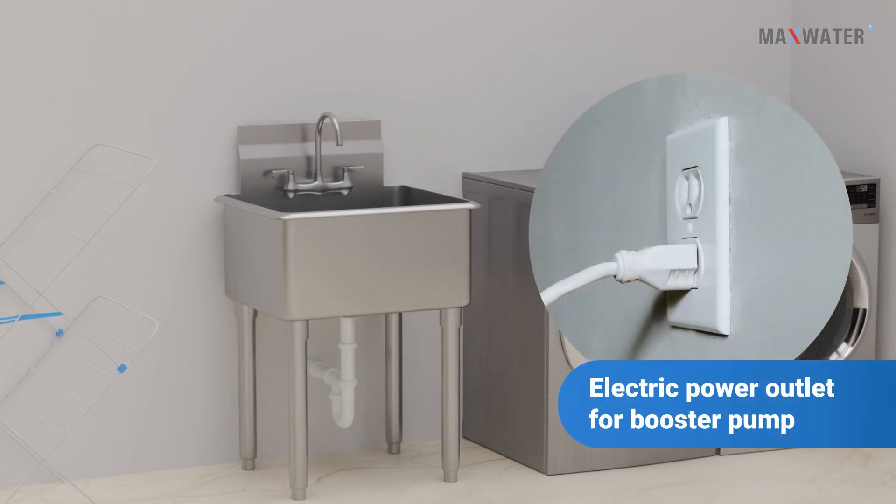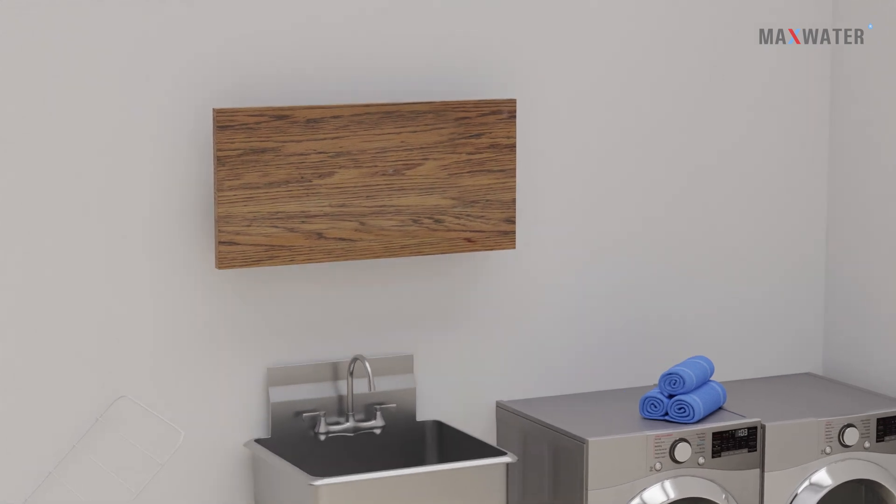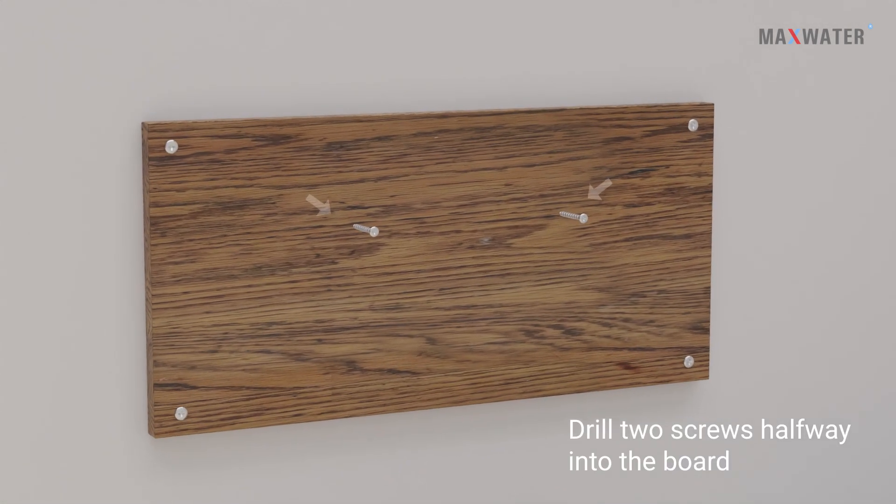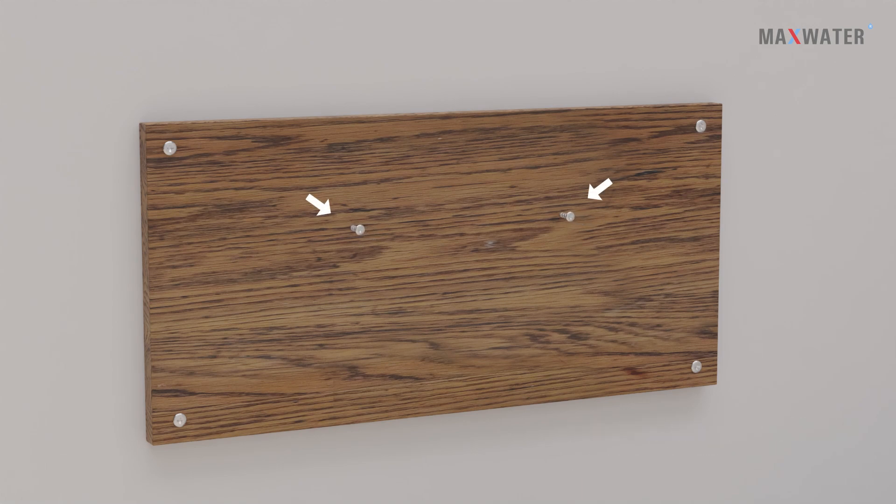Now board up the location and drill two screws halfway into the board, then use the two holes on the brackets to hang the system. Once hung, drill the two screws entirely to fully mount the system in place.